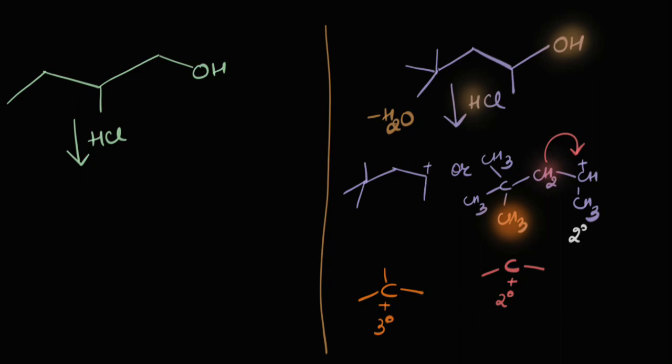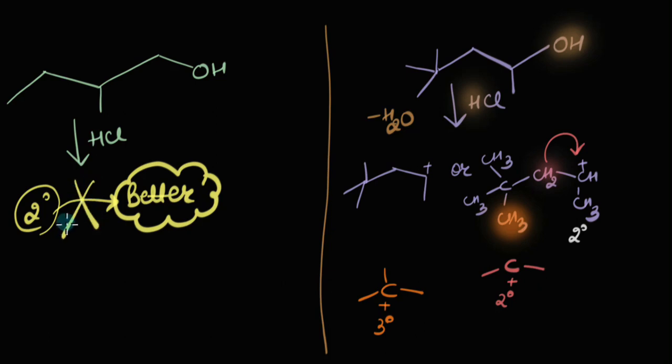See, if there is a 2 degree carbocation that's formed, the only way it's going to rearrange, if it becomes better. If it does not become better right away, it wouldn't do that. The reaction doesn't know what's going to happen next. It just knows the immediate next step. So, this rearrangement cannot happen. So, the product would be this.